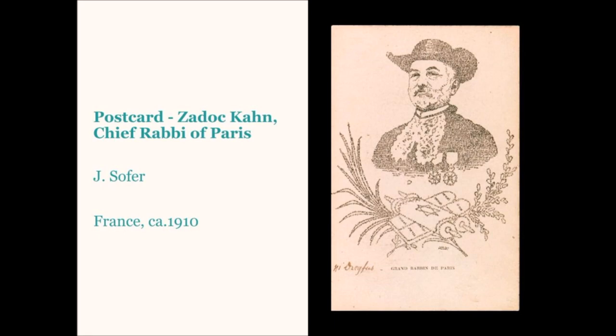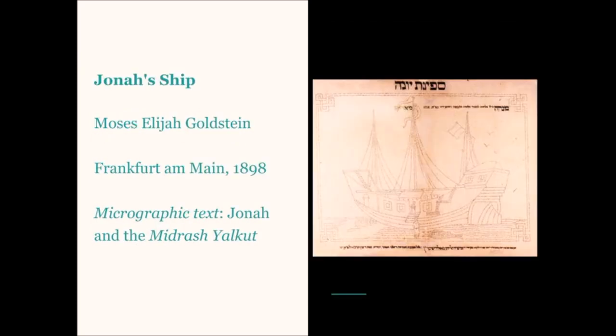Popular postcards featuring micrographic portraits of renowned rabbis were produced in Europe at the beginning of the 20th century. The portrait of Rabbi Kahn, formed from a French text, is drawn from his writing. Micrographic prints were frequently sold by charitable institutions to raise funds or sent as gifts to philanthropic donors. In many cases, the artist included generic texts expressing gratitude and left a blank space for a particular benefactor's name.